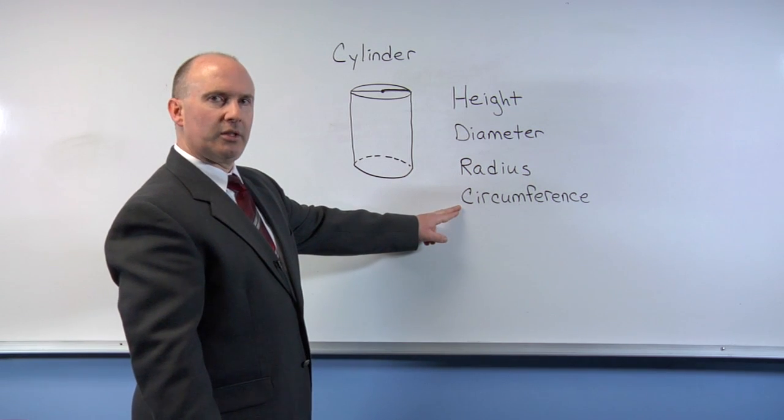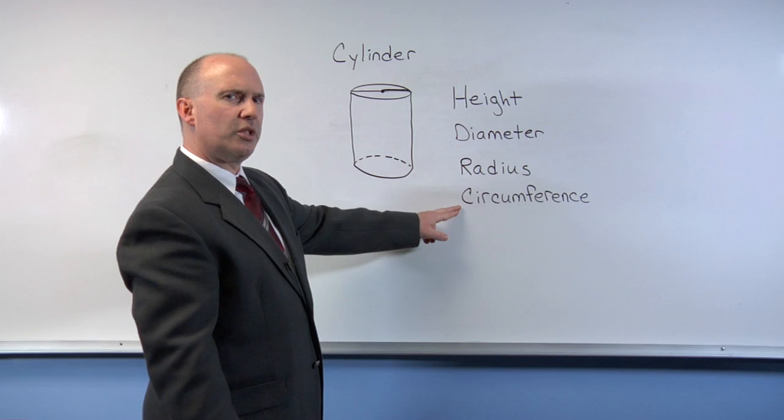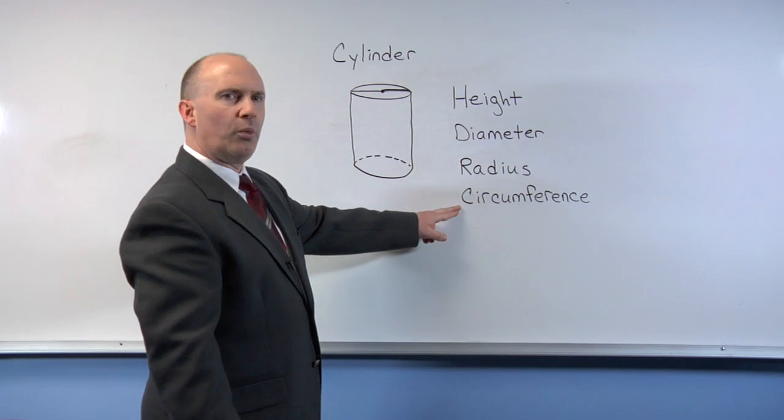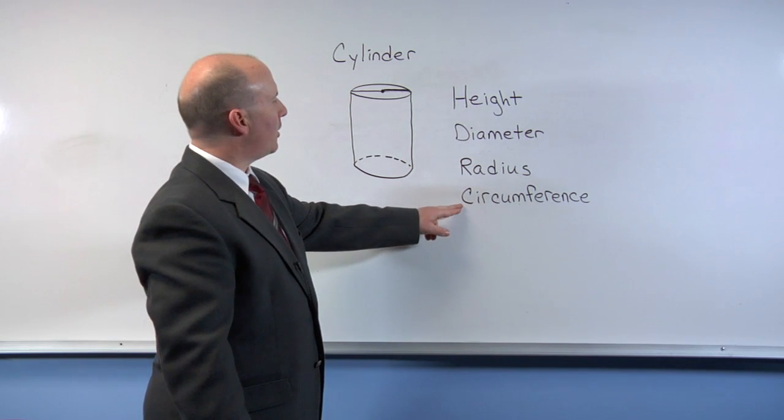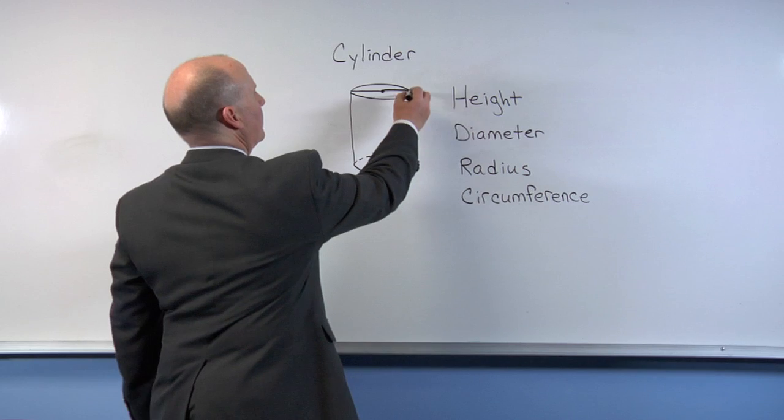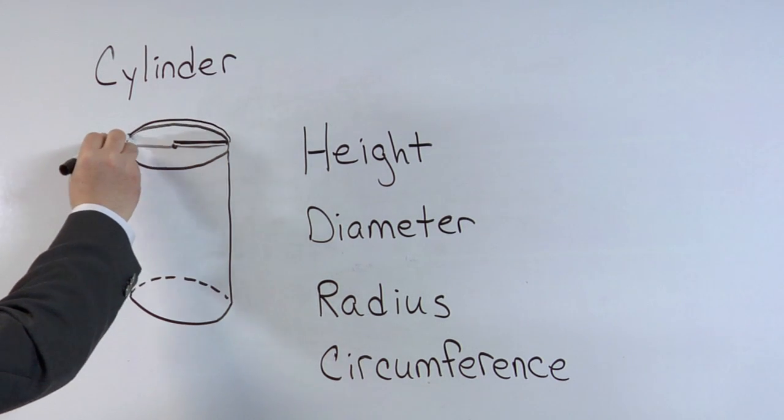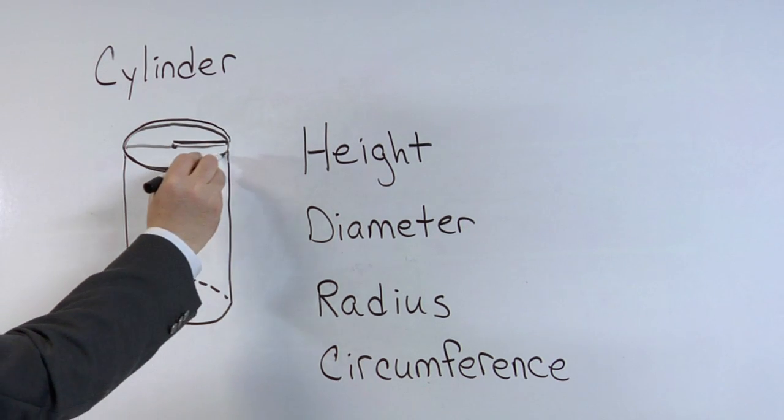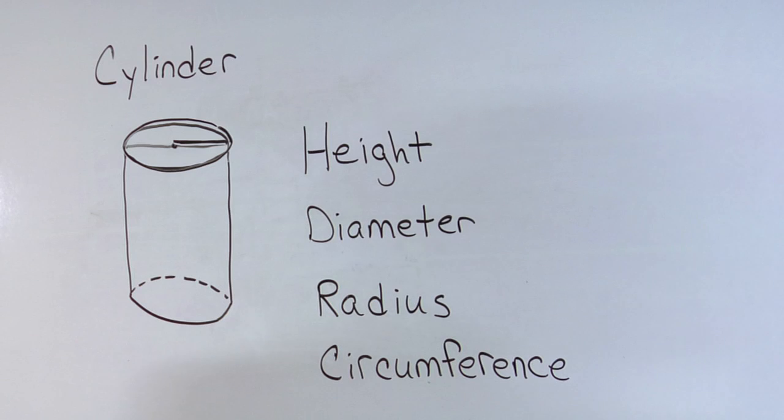The circumference is also a term that is used frequently with cylinders, and the circumference is the distance around the top of a cylinder.